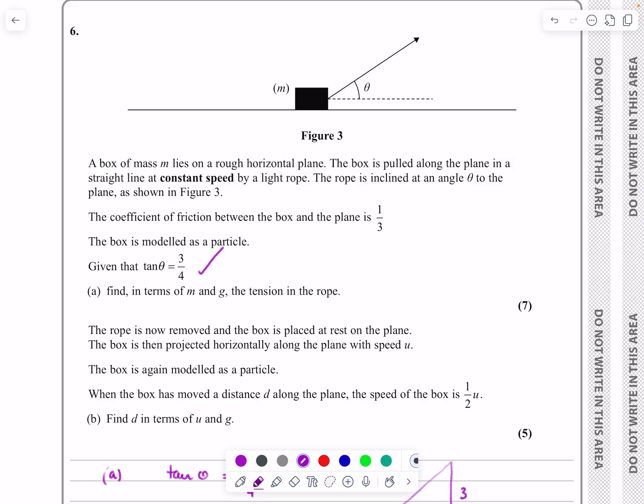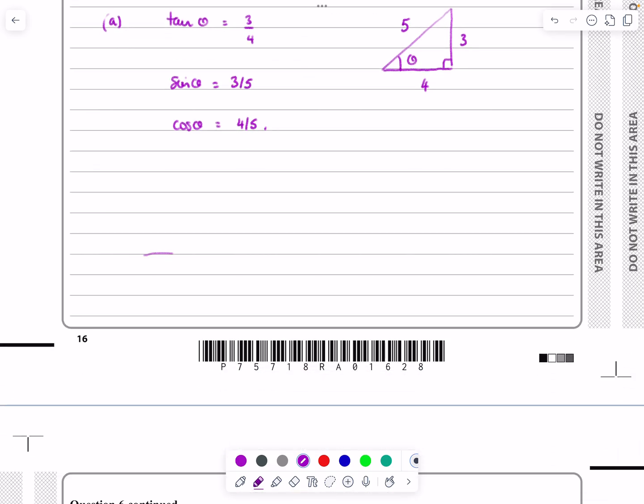That gives me sin theta would be opposite over hypotenuse, three-fifths, and cos theta would be adjacent over hypotenuse, four-fifths. Now let's go back and read the rest of the question. They're going to ask us to find the tension in the rope. So let's draw out a force diagram and see what we've got going on. We've got our particle sitting on a plane, the weight of the particle which is mg.